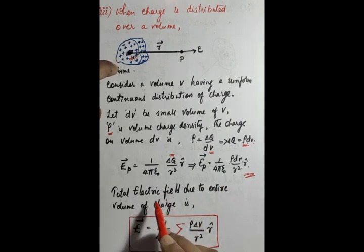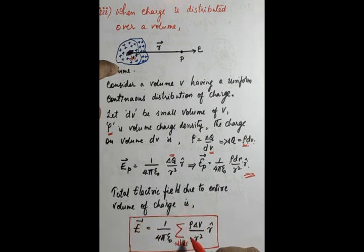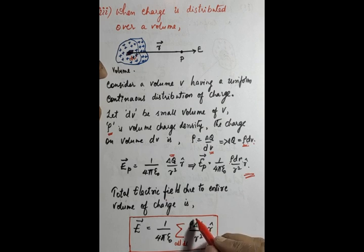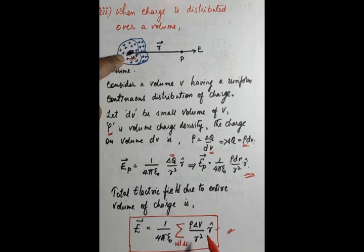The total electric field due to the entire volume of charges is: E = (1/4πε₀) × Σ(ρ · δv / r²) · r̂, keeping (1/4πε₀) aside as a constant and summing all contributions. Here r is the position vector and r̂ shows the direction. This gives the complete electric field at point P due to the total volume of charges. Thank you very much.